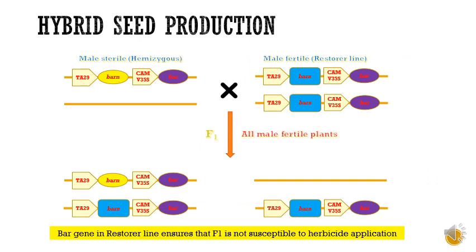For hybrid seed production, the male sterile line is crossed with a male fertile line which carries the male fertility gene in homozygous condition — Barstar and Bar. This is called the restorer line, and the male sterile is the A line. In F1, two genetically diverse seeds are formed. On the left-hand side in the diagram, the progeny carries both Barnase and Barstar, making it fertile. On the other hand, the Barstar-only combination also makes it fertile. It is important to incorporate the Bar gene in the restorer line to ensure that F1 progenies are not susceptible to herbicide application, especially phosphinothricin, so farmers can apply herbicide without restriction. The R line should be genetically diverse and show high specific combining ability with the A line, which is essential to exploit heterosis in the hybrid seed program. The B line is isogenic to A except for the two genes — one for fertility and one for herbicide resistance.